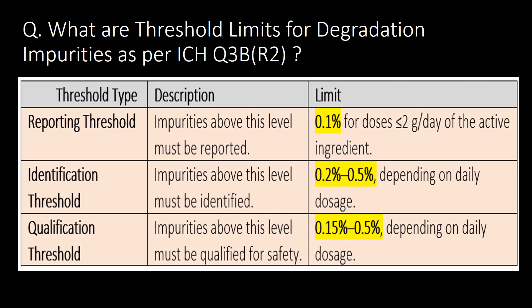What are the threshold limits for degradation impurities as per ICH Q3B-R2? You can refer to the table below for threshold type, description, and limit. The three important threshold types are: reporting threshold, identification threshold, and qualification threshold.